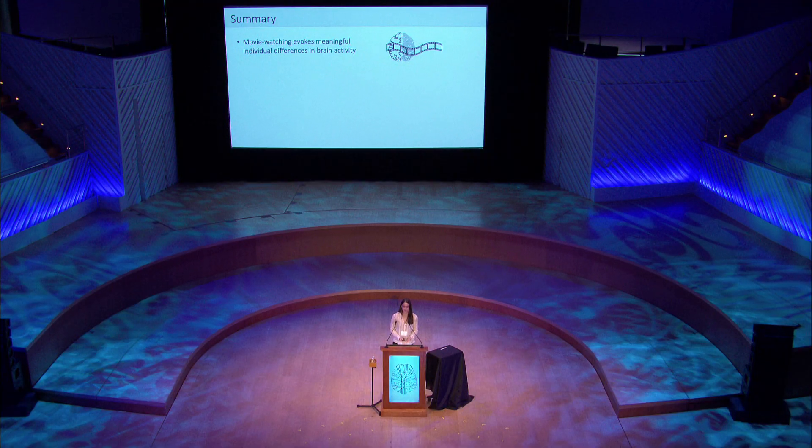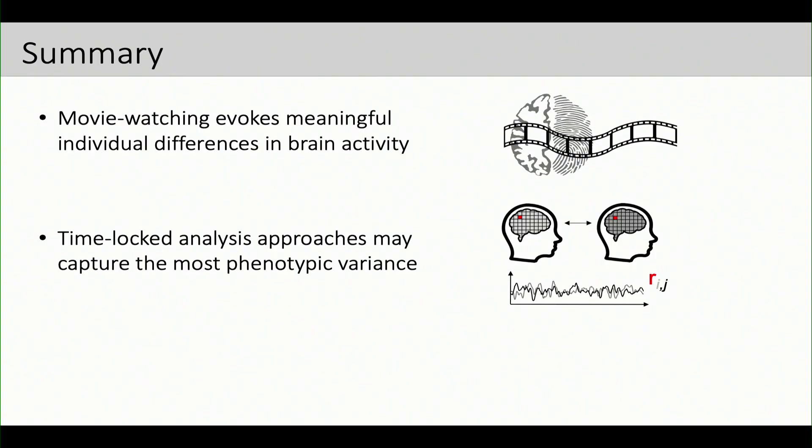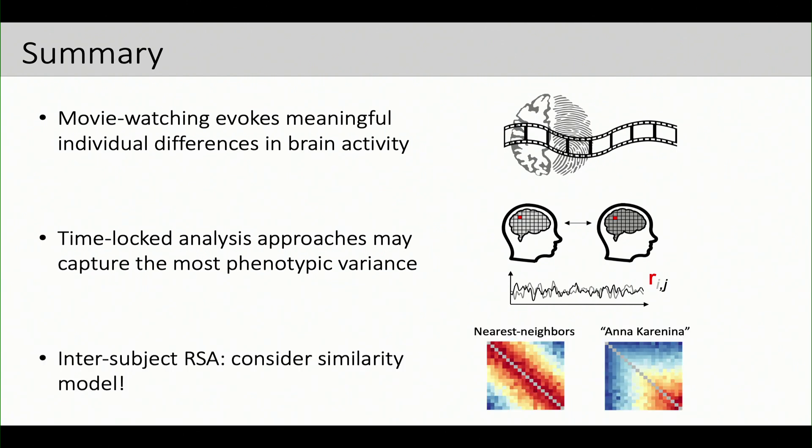So we're really interested in diving into this further. There's a lot of questions that we can ask with this. But I think this is an interesting preliminary set of results showing us that we can get some traction on these individual differences using things like movies that, they may not be purely naturalistic, but they preserve a lot of context. They have really interesting temporal dynamics. We're looking forward to exploring this further. So just to sum up, movie watching evokes a lot of similarity across people, but it also evokes meaningful individual differences. At least in our hands, these time-locked analysis approaches seem to be doing the best for capturing phenotypic variance. And finally, as we sort of converge on these types of intersubject representational similarity approaches, I think it's really important to consider the theory behind how we're modeling similarity and how we think various traits might be represented in the brain.